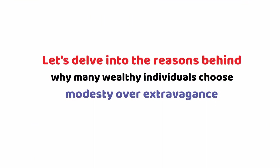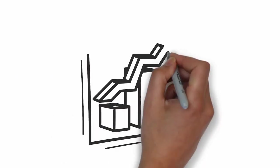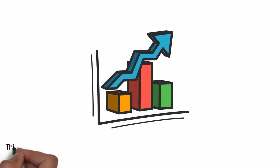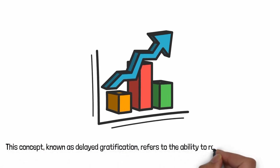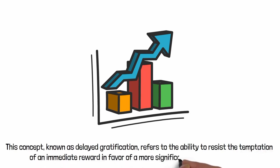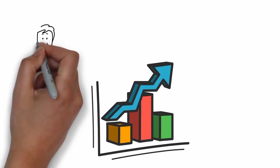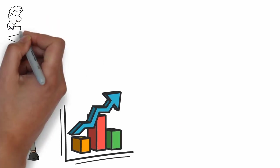Let's delve into the reasons behind why many wealthy individuals choose modesty over extravagance. Firstly, prioritizing long-term financial stability over immediate gratification is the key reason. This concept, known as delayed gratification, refers to the ability to resist the temptation of an immediate reward in favor of a more significant reward in the future. It requires self-control and patience, traits often found in successful investors like Warren Buffett.